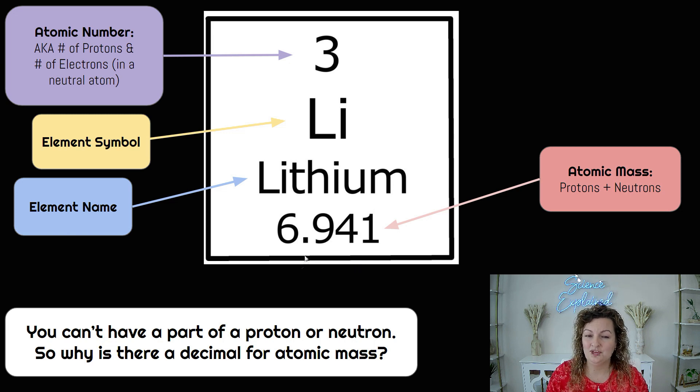Now, have you ever wondered why this is in a decimal place? This is protons plus neutrons. We cannot have part of a proton or part of a neutron, so how in the world does it become a decimal in the first place? Well, that's part about isotopes.